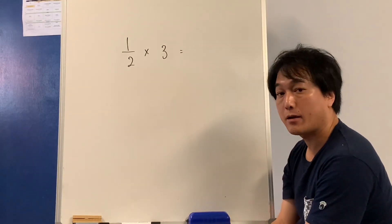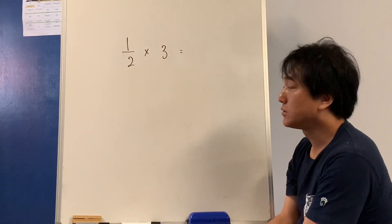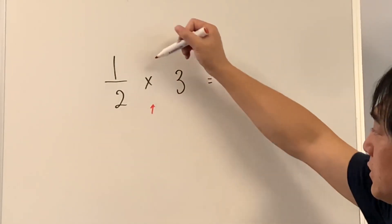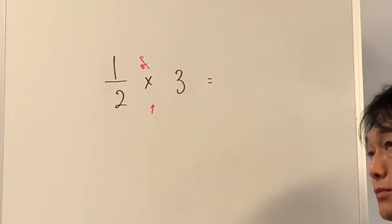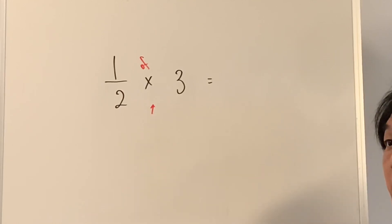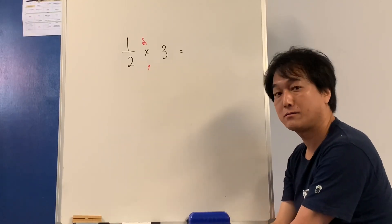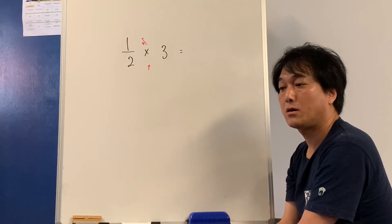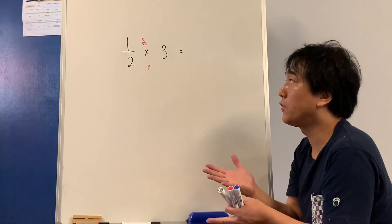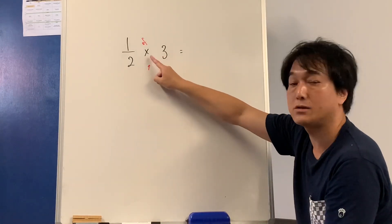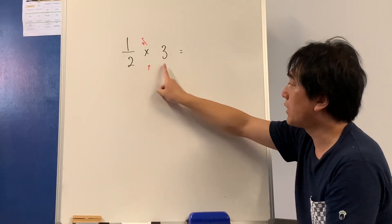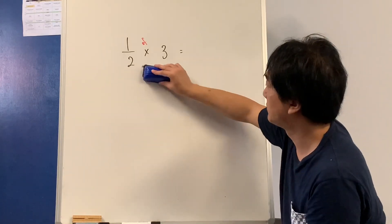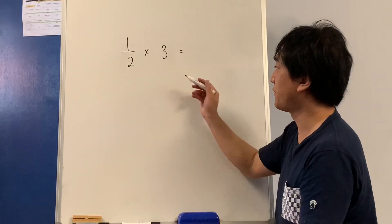People say maths is like a language, and we sometimes say 'of' to explain multiplication. For example, if I want 2 bags of lollies, I say 'May I have 2 of those?' — 'of' usually means multiplication. So this is 1 half of 3. Half of 3 — I can do that.